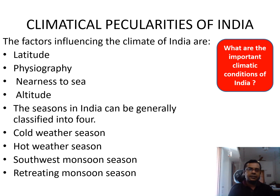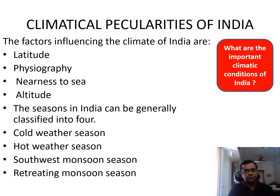What are the important climatic conditions of India? The factors that influence the climate of India are: the first one is the latitude, the second one is the physiography, the third one is its nearness to the sea, and the fourth one is the altitude.